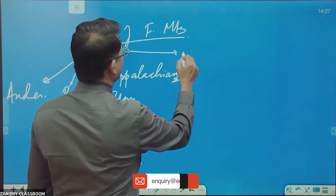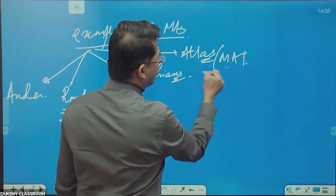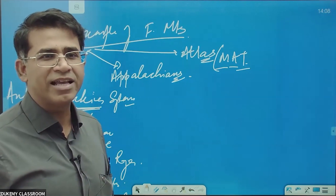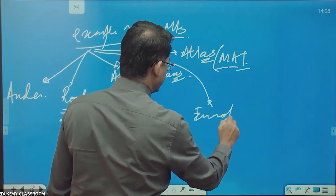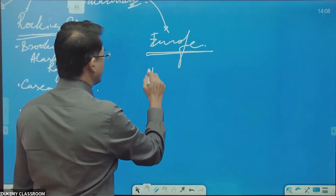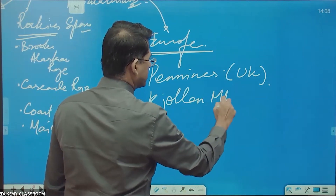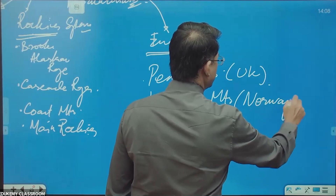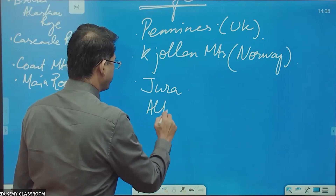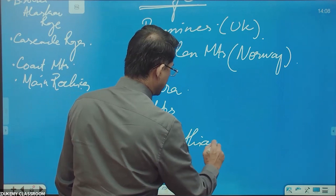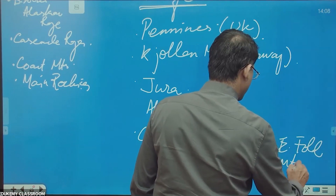We also have the Atlas Mountains, which are in North African countries — Morocco, Algeria, and Tunisia. Then the mountains of Europe: the Pennines in the UK, the Jelen Mountains in Norway, Jura Mountains, and the Alps.